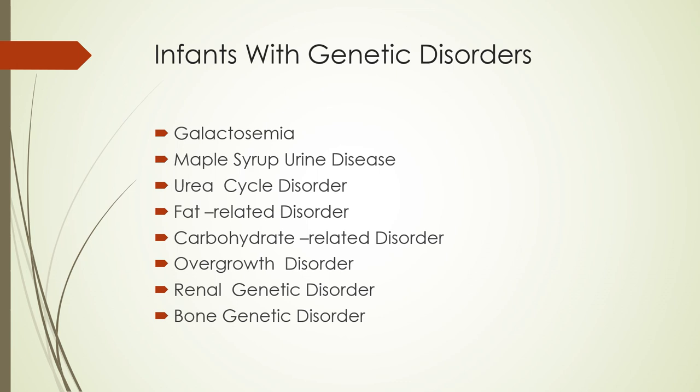The first genetic disorder discussed is galactosemia, a classic genetic disorder that occurs when the liver enzyme galactose-1-phosphate uridyltransferase is missing or not functional. This enzyme is responsible for breaking down galactose into glucose. Galactose is a sugar byproduct of lactose found in breast milk, cow's milk, and other dairy food products. The next condition is maple syrup urine disease, a rare genetic condition of protein metabolism in which breakdown byproducts build up in the blood and urine, causing coma and death if untreated.